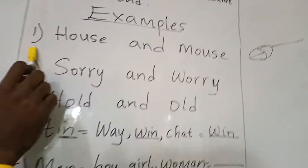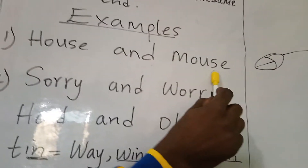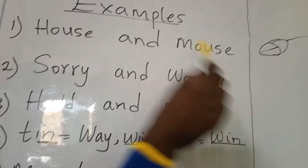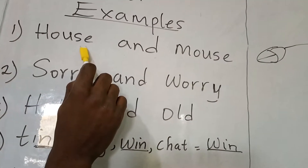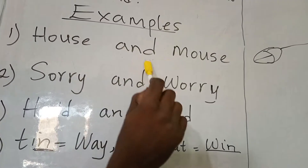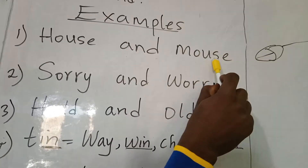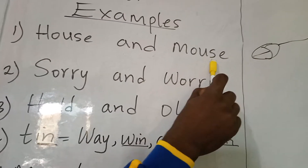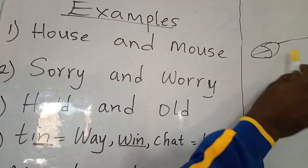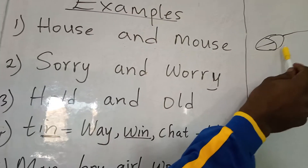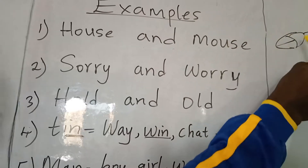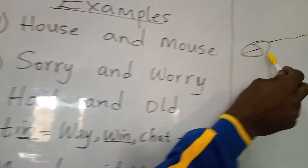Example 1: house and mouse. House is where we live, and mouse is the part of a computer. In the computer, we have this mouse.